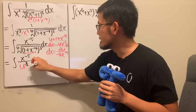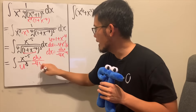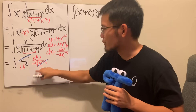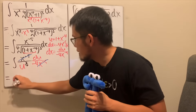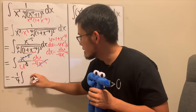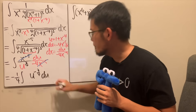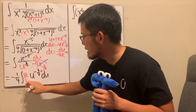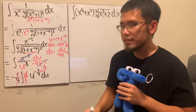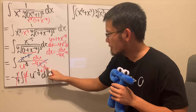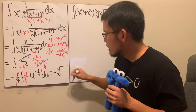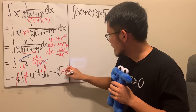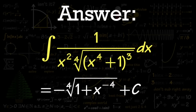We have the integral with x to the negative five, and u to the three-over-four power, with dx equal to du over negative four x to the negative five. The x to the negative five cancels out beautifully. We get negative one-fourth in front, integrating u to the negative three-over-four, du. Adding one to the exponent gives positive one-fourth, divided by one-fourth, which gives a factor of four — they cancel nicely. So the answer is negative times the fourth root of one plus x to the negative four, plus C.